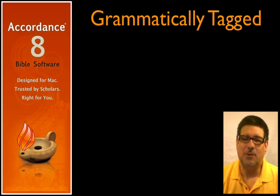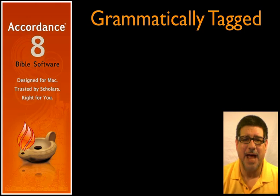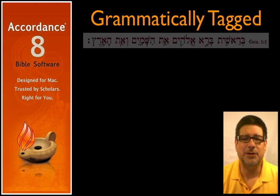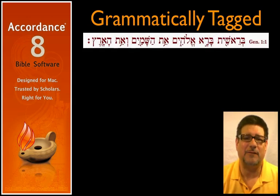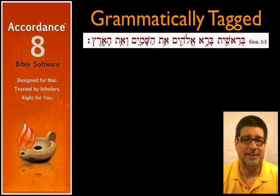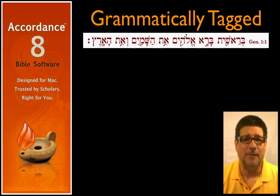Accordance has a wide range of Hebrew texts, many of which include full grammatical tagging. Consider this example: Genesis 1:1 from the Hebrew Bible. What you see is this — but there's even more information hidden behind it, like this.